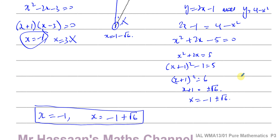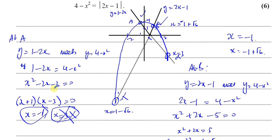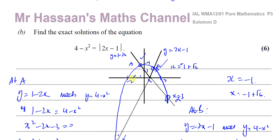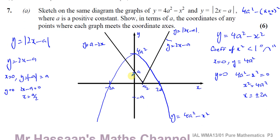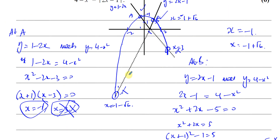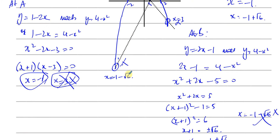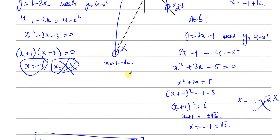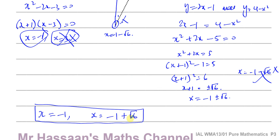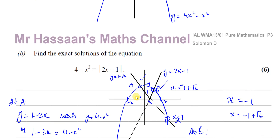Our two accepted solutions are x equals minus 1, and x equals minus 1 plus the square root of 6. We rejected x equals minus 1 minus root 6 and x equals 3 — those were extra solutions produced by the equations because the equation doesn't account for the modulus graph bouncing back up. These are exact solutions, so we do not round to 2 or 3 significant figures.